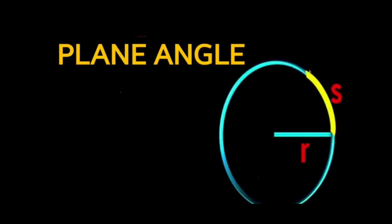A circle is a two-dimensional shape and the radius is the line segment joining the center of a circle to the point on the circle, denoted by the letter R. The arc of a circle is a portion of the circumference of the circle, denoted by the letter S or L — S because it is the segment of the circumference, and L stands for length.